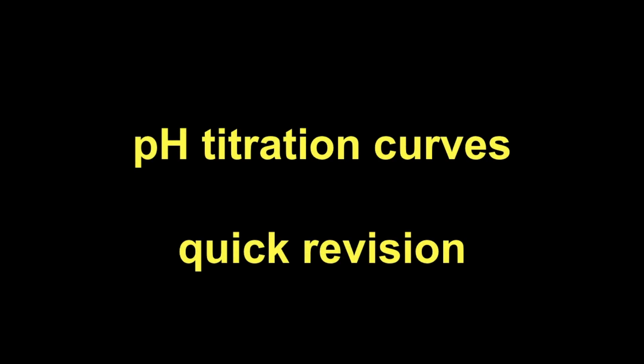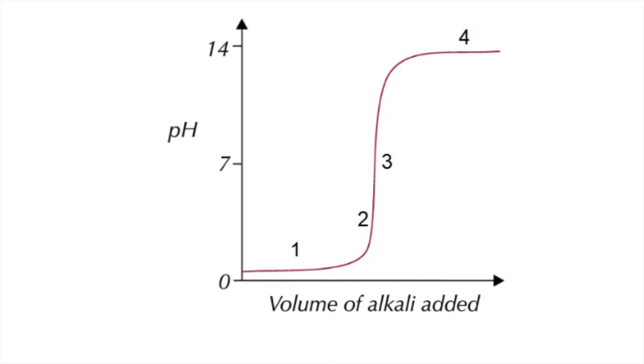A quick revision video on pH titration curves. The first thing I'm going to do is look at the key zones on the titration curves. You can see I've got numbers 1 to 4 there, so we'll go through each of those in turn. Zone 1, at the start of the titration, the pH increases very slightly. In this case, we've got the acid in the conical flask and the alkali is being added from the burette.